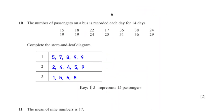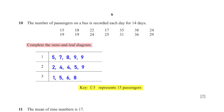The number of passengers on a bus is recorded each day for 14 days. Complete the stem and leaf diagram, where the key 1|5 represents 15 passengers. For 15, the stem is 1 and the leaf is 5; for 18, the stem is 1 and the leaf is 8. Repeat the same process for all the numbers, and ensure the leaves on each line are arranged in ascending order.